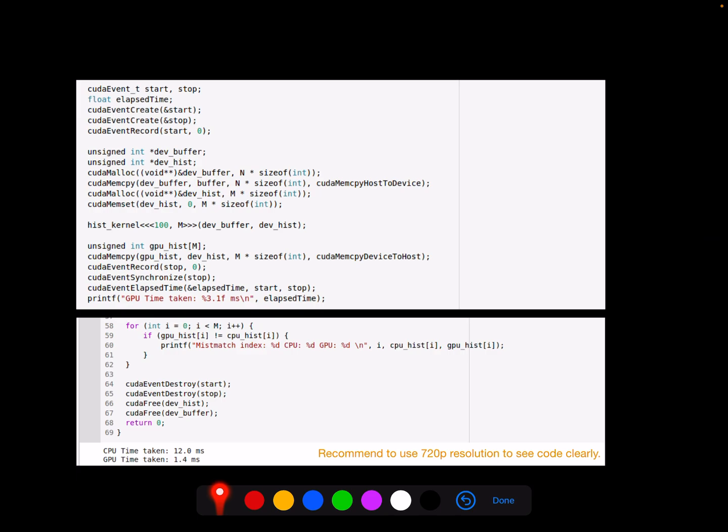So after we define the kernel function, as what we did in previous examples, we have a CUDA event to measure the GPU running times, we define the input buffer, we define the output histogram, and we just call these kernel functions by defining 100 blocks and each block has main threads. Then eventually we output the GPU time.